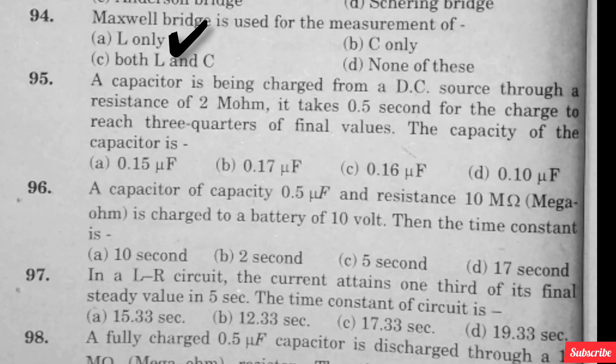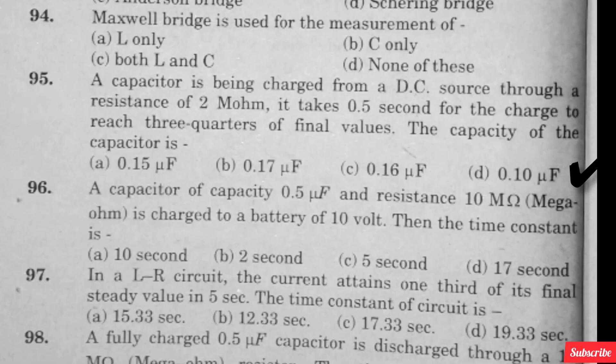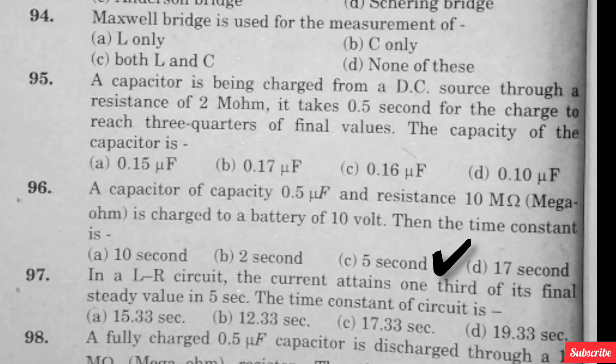A capacitor is being charged from a DC source through a resistance of 2 ohm. It takes 0.5 seconds for the voltage to reach three-quarters of final value. The capacitance of the capacitor is — option D is right. A capacitor of capacity 0.5 µF and resistance 10 megaohm is charged by a battery of 10 volt. Then the time constant is — option C is right.